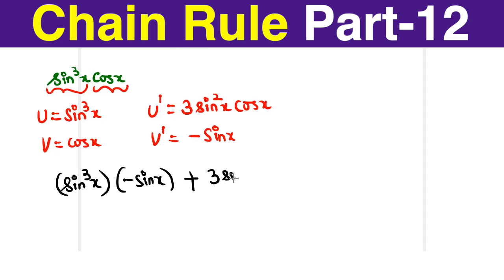This is 3 sin square x cos x into another cos x that is the v.